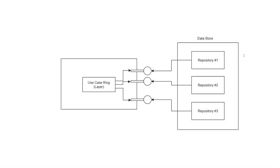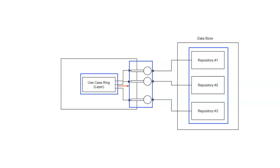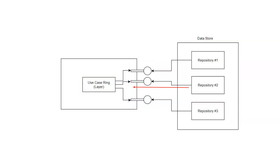We cannot be dependent on the data layer or the repository layer. Therefore, we need to use an interface as an abstraction of a data store so that our use case can work with the abstraction. And then later, we can implement this interface as a plugin to plug into this use case.